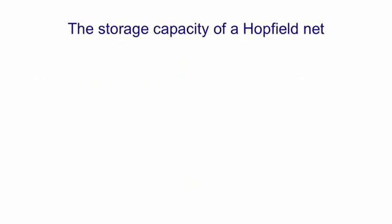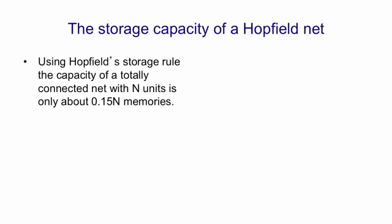After Hopfield invented Hopfield nets as memory storage devices, the field became obsessed by the storage capacity of a Hopfield net. Using the Hopfield storage rule for a totally connected net, the capacity is about 0.15n memories. That is, if you have n binary threshold units, the number of memories you can store is about 0.15n before memories start getting confused with one another. So that's the number you can store and still hope to retrieve them sensibly.